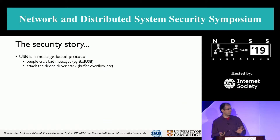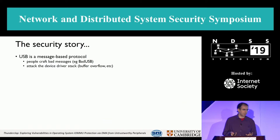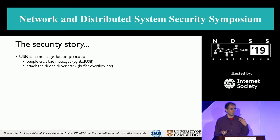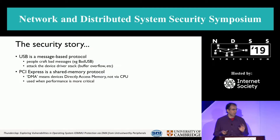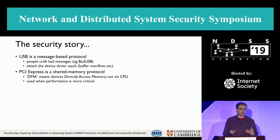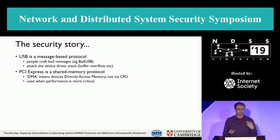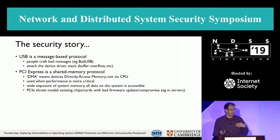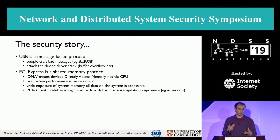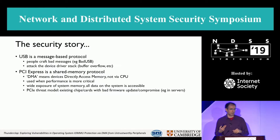USB is a message-based protocol, which means that people can craft bad messages — buffer overflow and unusual networking-kind of attacks. PCI Express is a shared memory protocol, which means you can do direct memory access from a device without going via the CPU, and this exposes potentially all of system memory to peripheral devices.